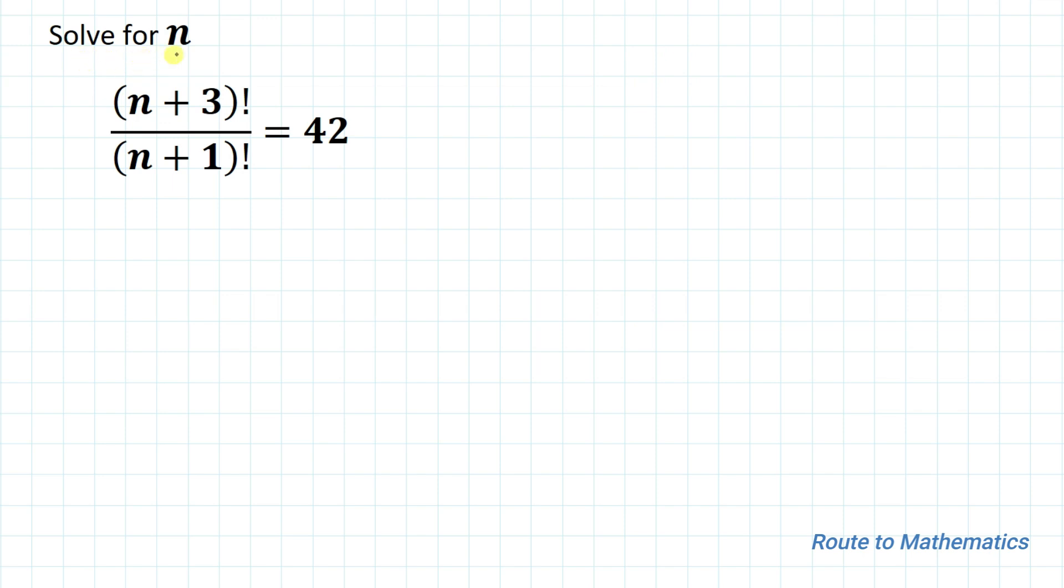The given question is: solve for n, where (n+3)! divided by (n+1)! equals 42. So here we have given an equation, and from that equation we are asked to find the value of n.